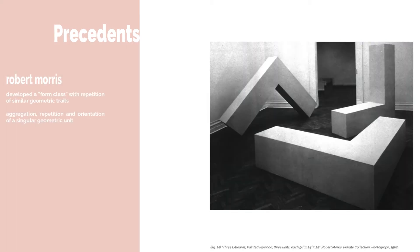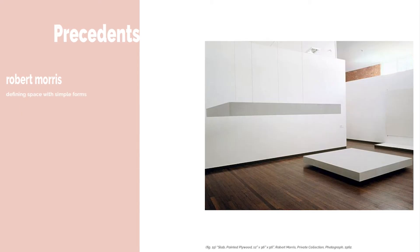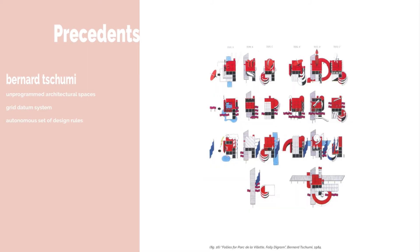Robert Morris developed a form class, which is a series of iterations of similar geometric traits — that means aggregation, repetition, and changing the orientation of the objects. Robert Morris defined complex spaces with simple forms. Bernard Schumi popularized the idea of unprogrammed architectural spaces. His follies in his 1984 Parc des Villettes created a series of autonomous design rules within a datum grid system, which provided design constraints that allowed him to apply these concepts to the brownfield he was provided.